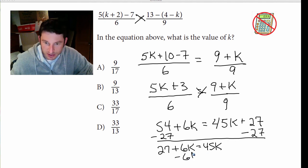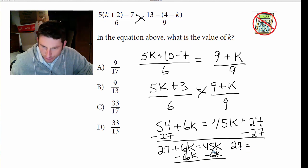I'm running out of space here, so I'll try and be as careful as possible. So now we have 27 equals 45 minus 6, which is 39. 39k.